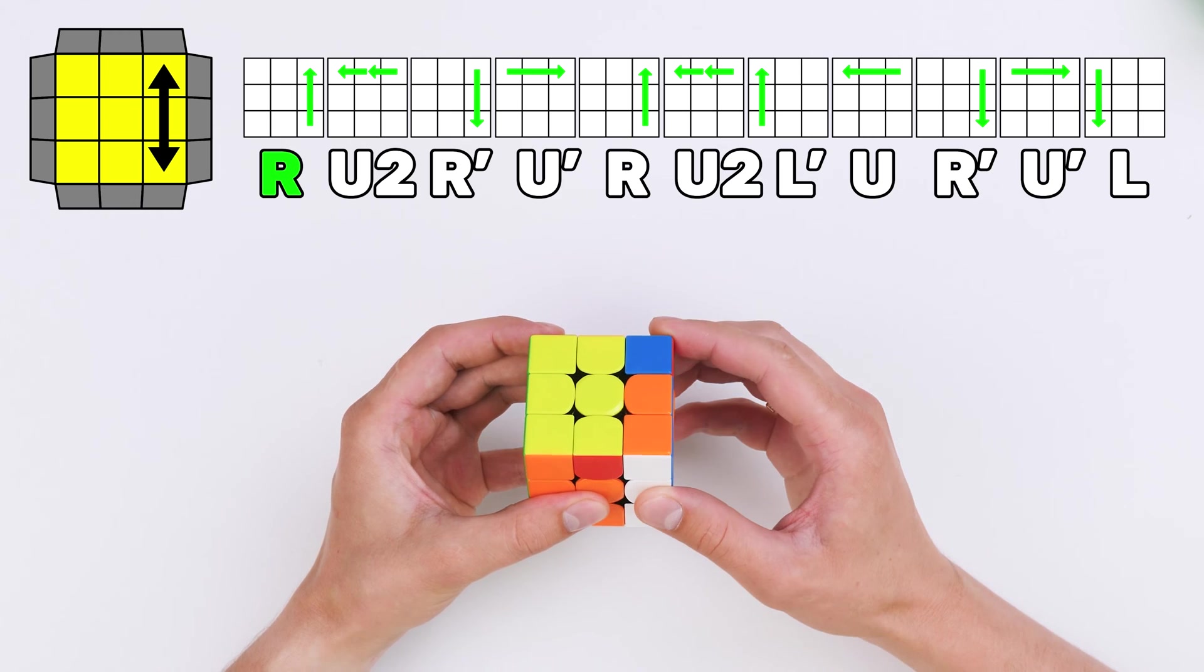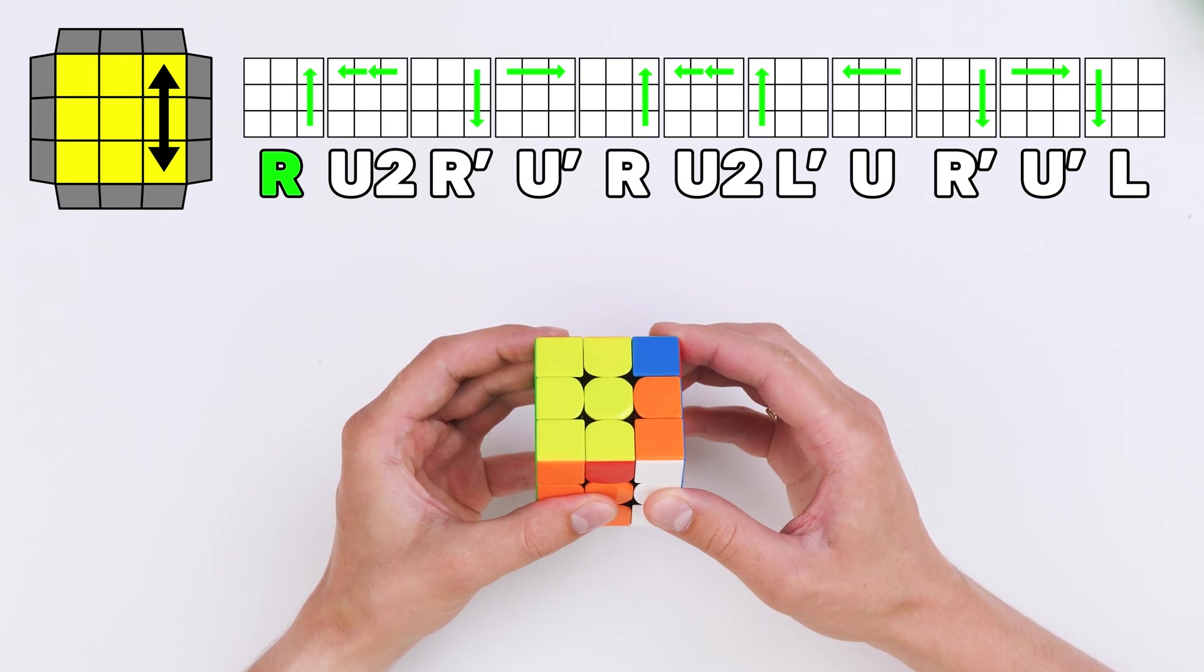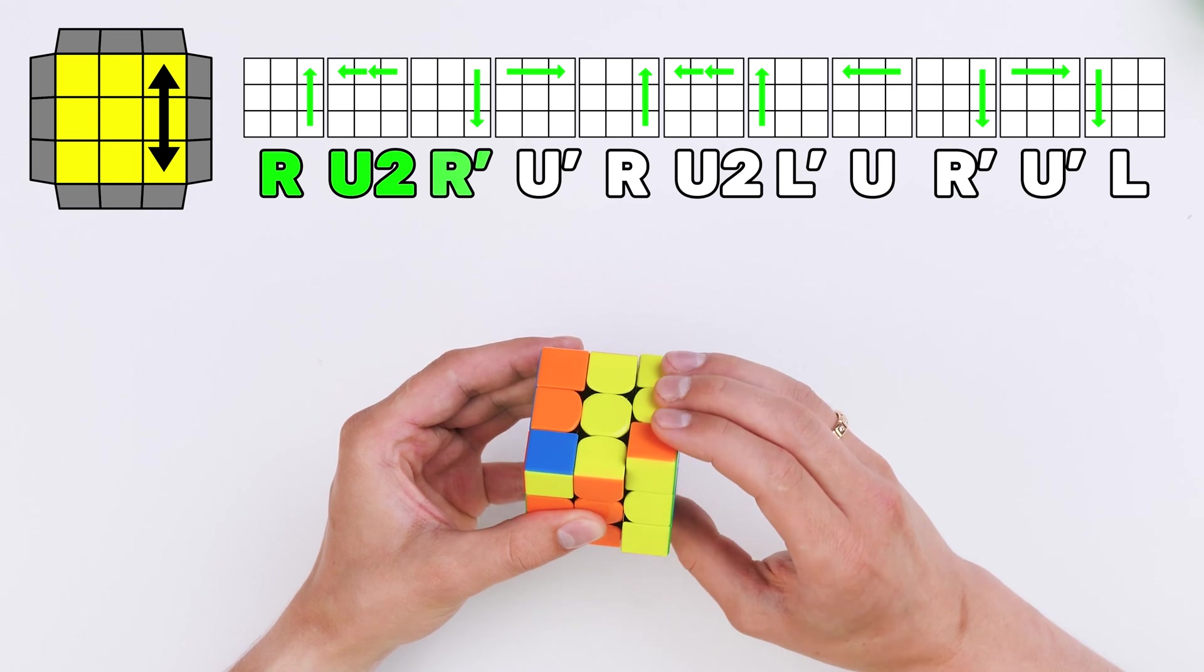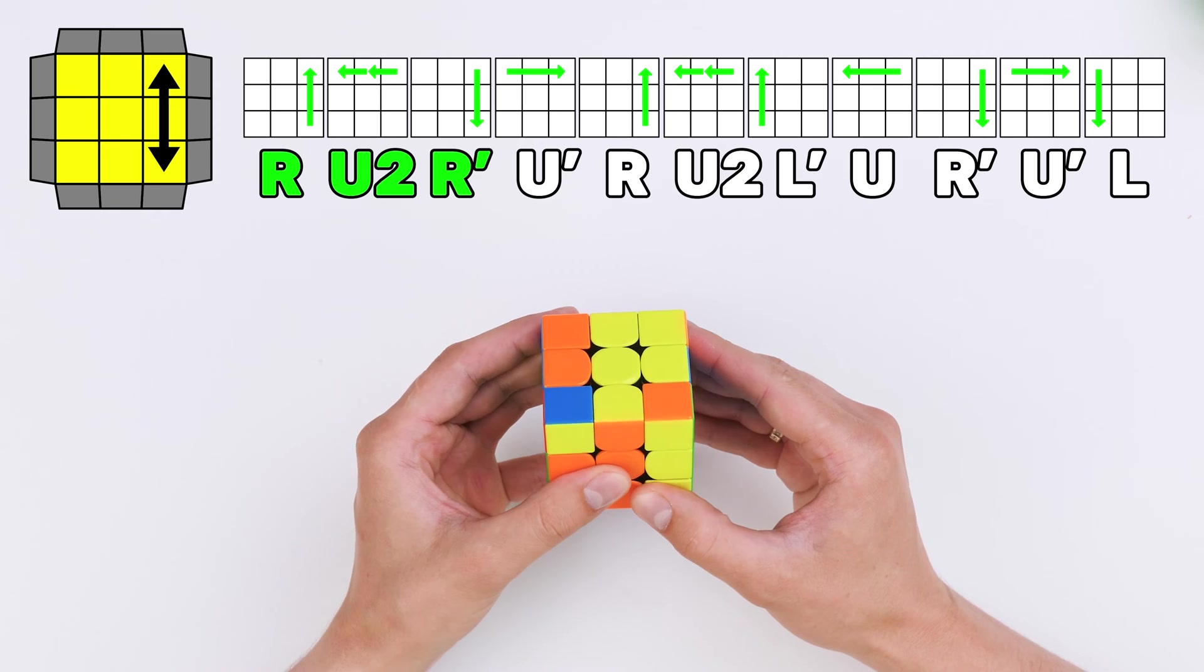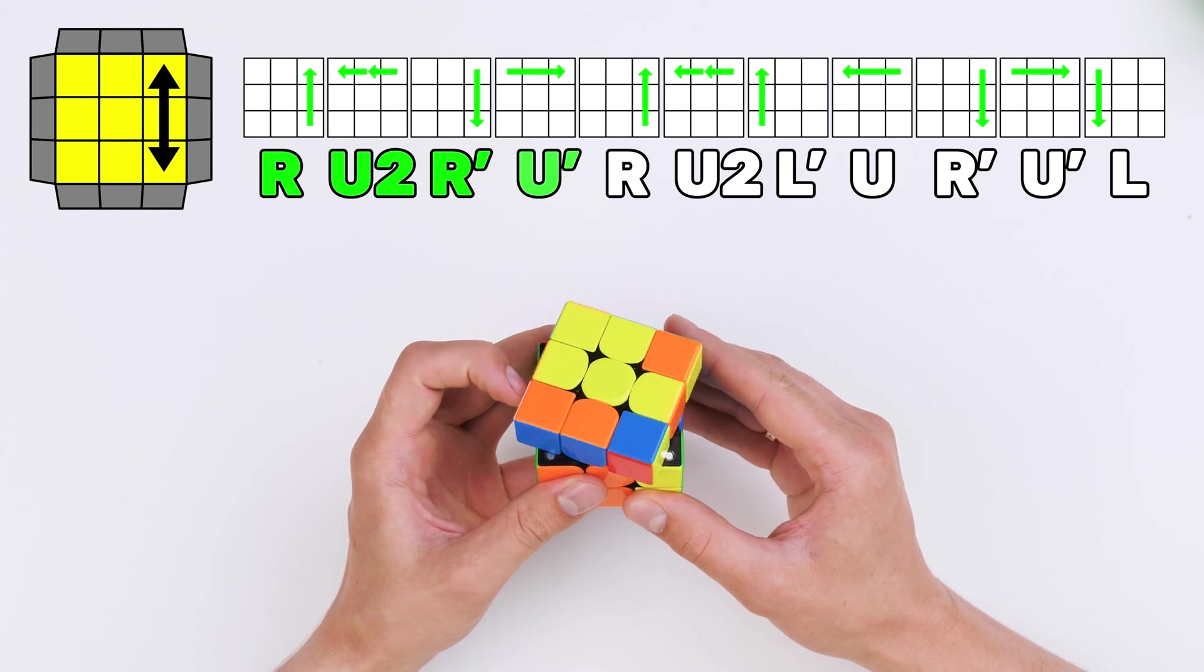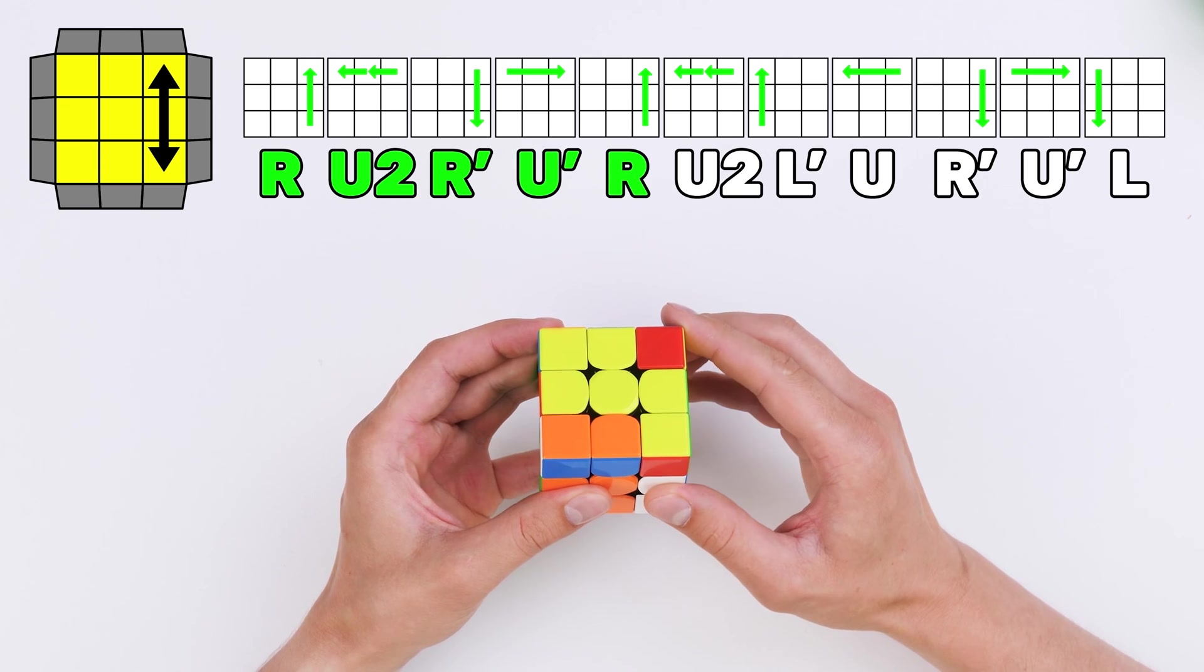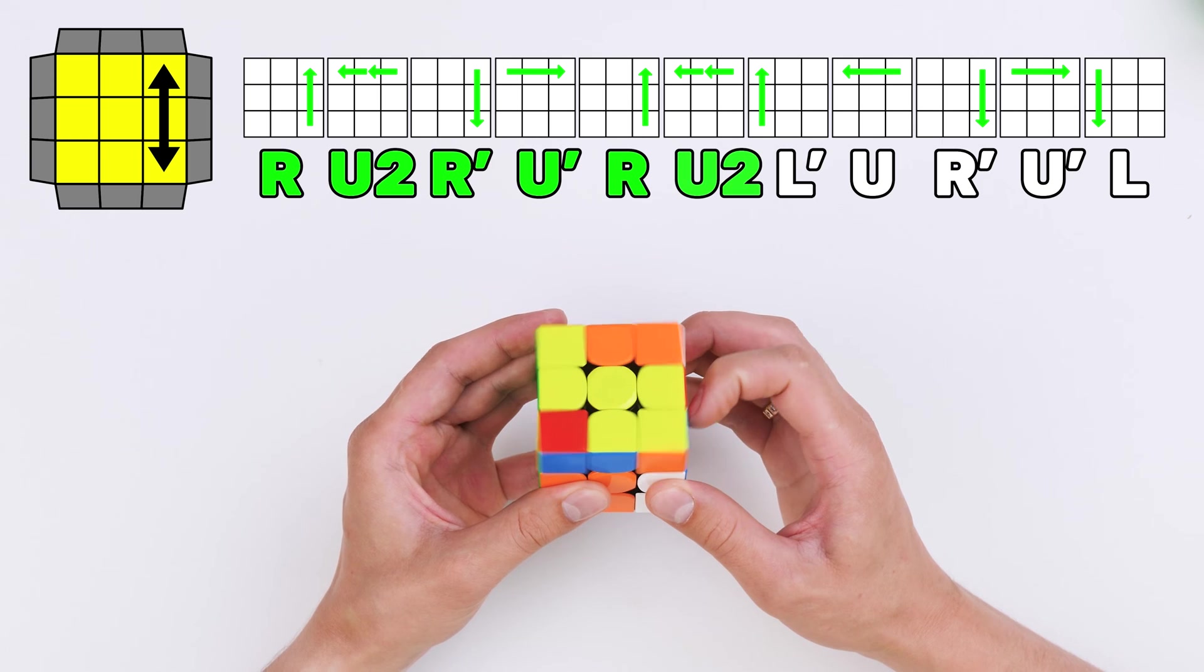Right side clockwise. Top side double turn clockwise. Right side counter clockwise. Then the upper side counter clockwise. The right side clockwise. And again the double turn of the upper side.